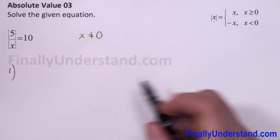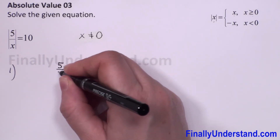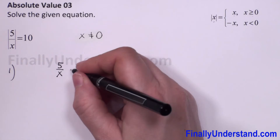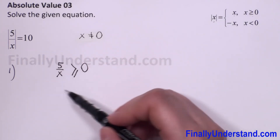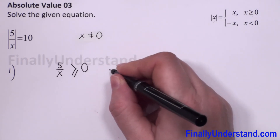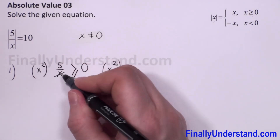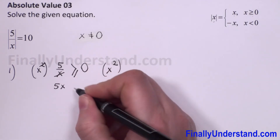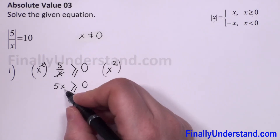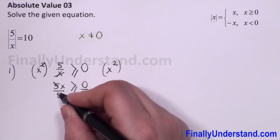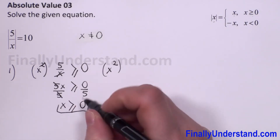For the first case, the domain must satisfy 5 over x greater than or equal to 0. To solve this inequality, we multiply both sides by x squared. The x squared cancels, giving us 5x is greater than or equal to 0. Dividing both sides by 5, we get x is greater than or equal to 0. This is our domain for the first case.